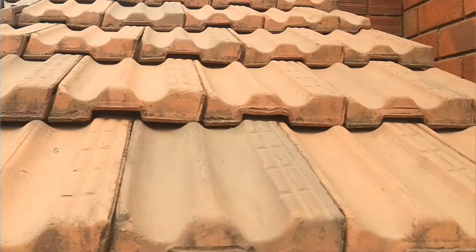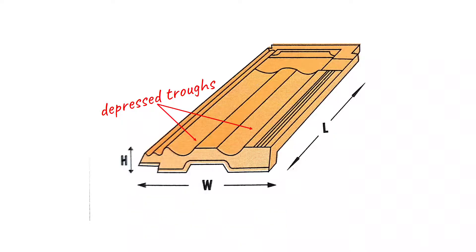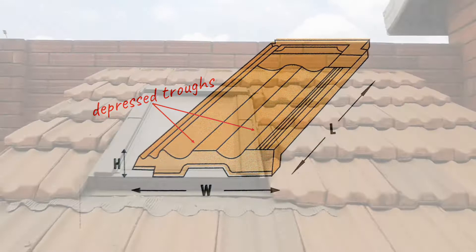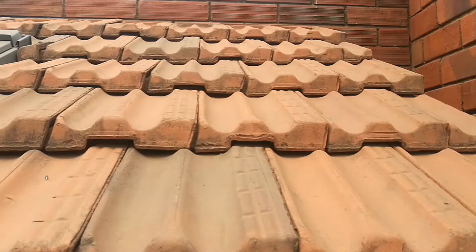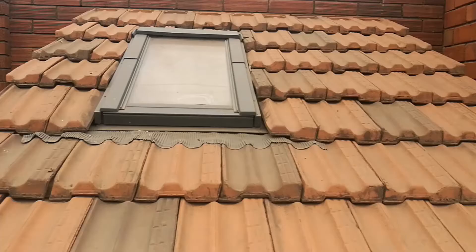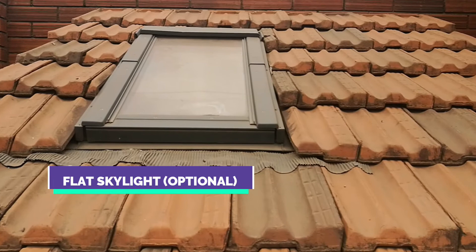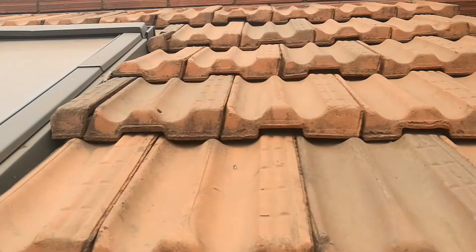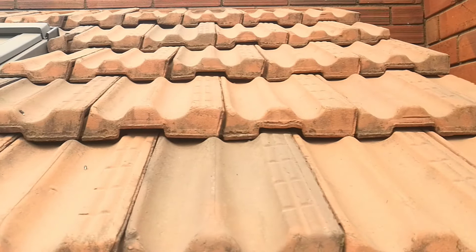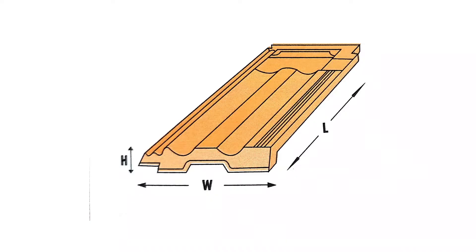The first design is the Mangalo tile. It has a flat design with two depressed troughs that channel water once it drains. Looking at the dimensions of this tile: the length is 410 millimeters, the width is 250 millimeters, and the height is 20 millimeters. The Mangalo tile weighs around 3 kilograms.